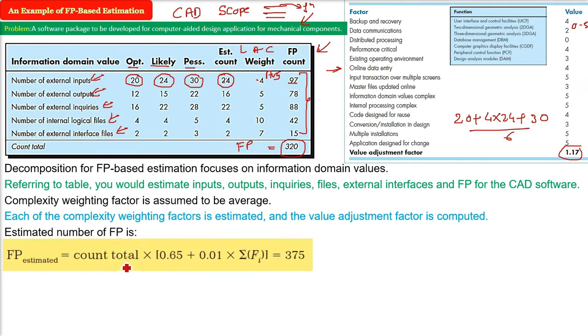So the final formula is this one: count total times 0.65 plus 0.01 times sigma fi. Sigma fi is nothing but 1.17. And then we have this count total which is going to be 320, multiply here and you get 375. Now we got the function point. The function point already we have seen, so you can revisit, but right now the 375 is our function points.